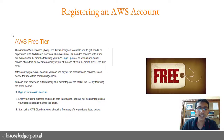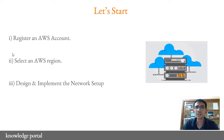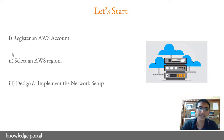After registering for the AWS free tier, the second thing we have to select is the AWS region. For our labs, we will be selecting North Virginia, which is the US East 1 region, because generally there are a lot of services available under US East 1 that are not currently available in other regions.